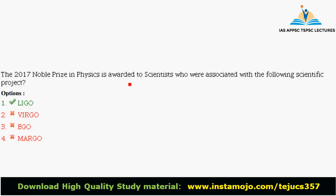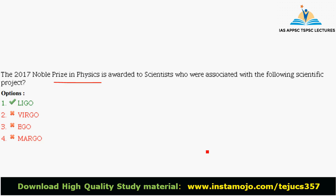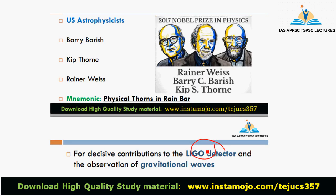One question: in 2017, the Nobel Prize in Physics is awarded to the scientists who were associated with the following scientific project. If you have a general question about APPSC — Nobel Prize in Physics awarded to scientists — in 2012, 2011, they were awarded to scientists. There are many questions after October 13th that you should be aware of.